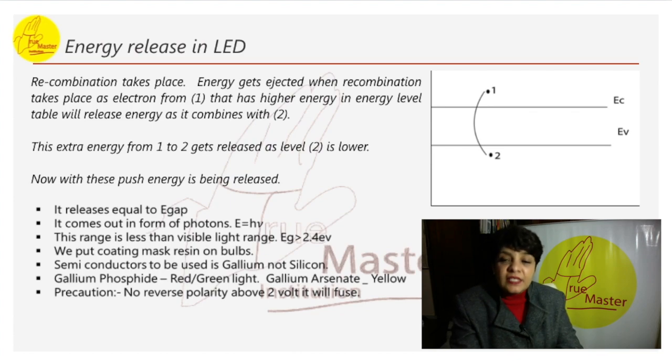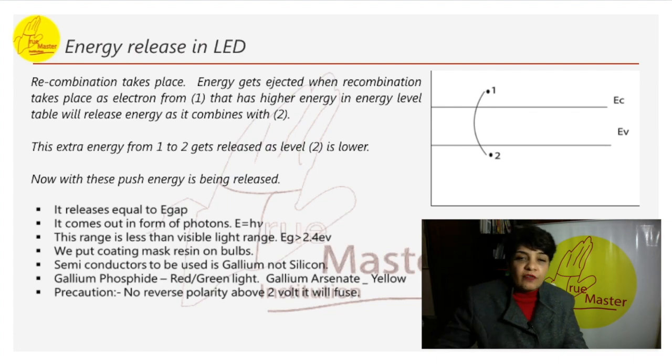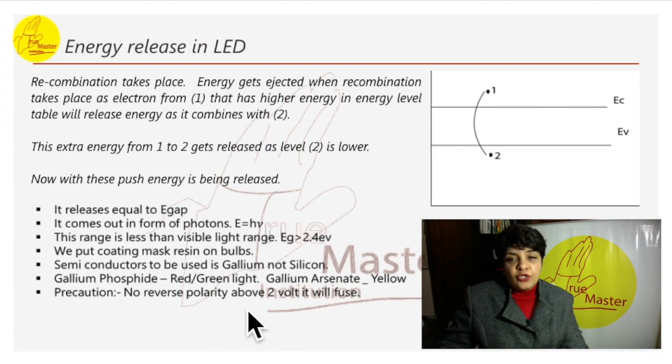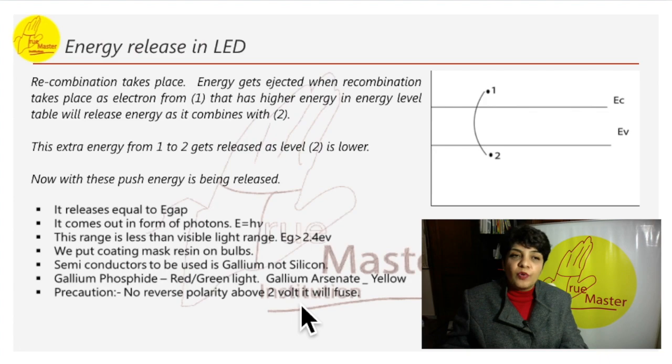What precaution we have to take in this case. In case by mistake we put up forward biasing, then even at 5 volt the circuit will fuse. So it cannot be 5 volt. It cannot be above 5 volt. In reverse biasing the reverse polarity should not be more than 2 volt. So we have to be careful that on reverse polarity it should not be more than 2 volt. And in case it is forward bias not more than 5 volt.